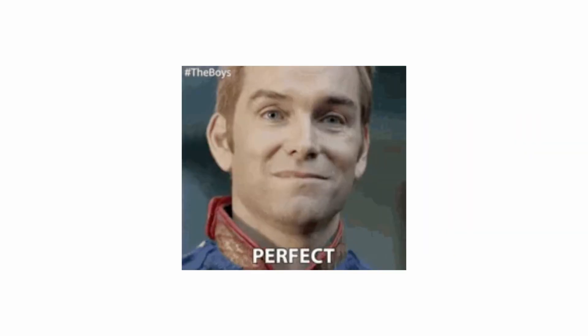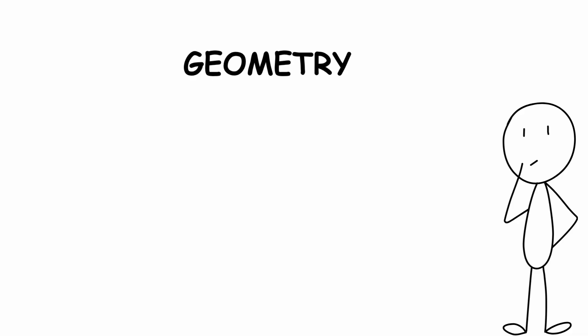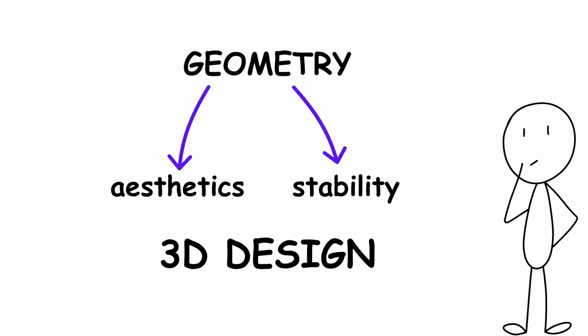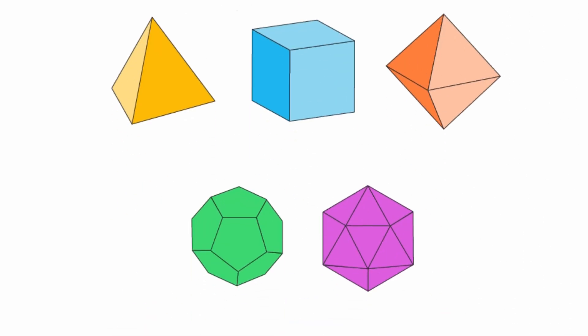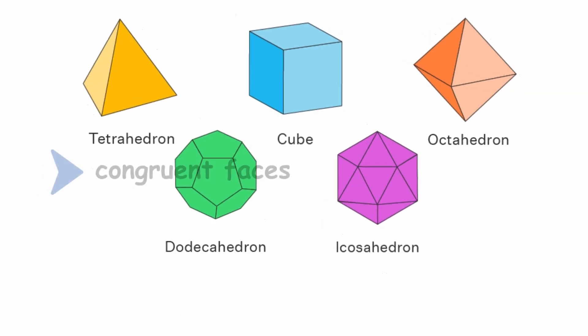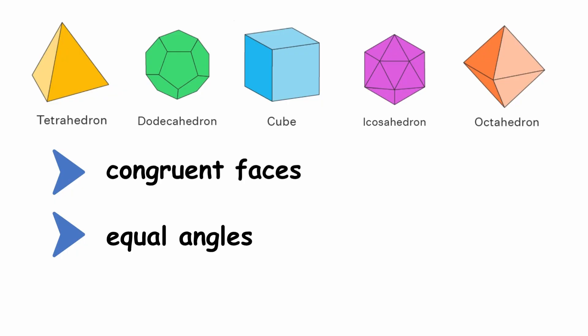The platonic solids are models of perfect symmetry, ideal for understanding how geometry regulates stability and aesthetics in 3D design. These five solids, the tetrahedron, cube, octahedron, dodecahedron, and icosahedron are defined by having congruent faces, equal angles, and equivalent vertices.